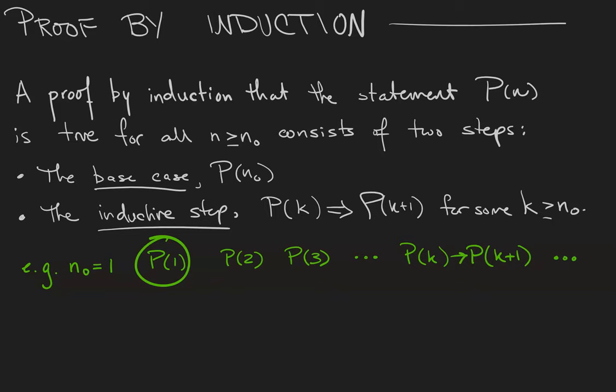Here's what that does since k was arbitrary. It means that because P(1) is true, P(2) is also true. Because P(2) is true, P(3) is true. P(4) follows P(3), etc. P(n), and therefore all the integers beyond our given threshold.